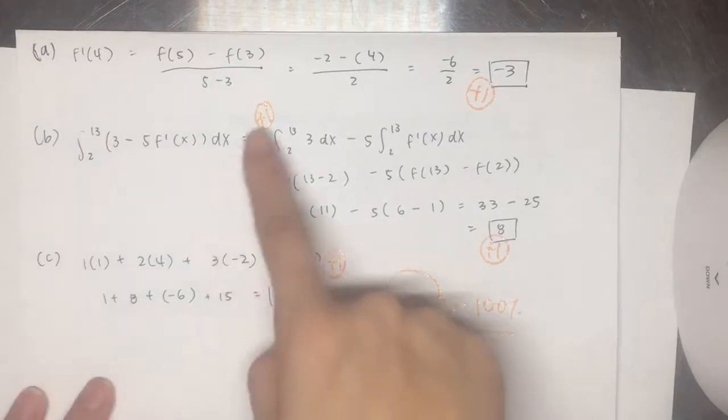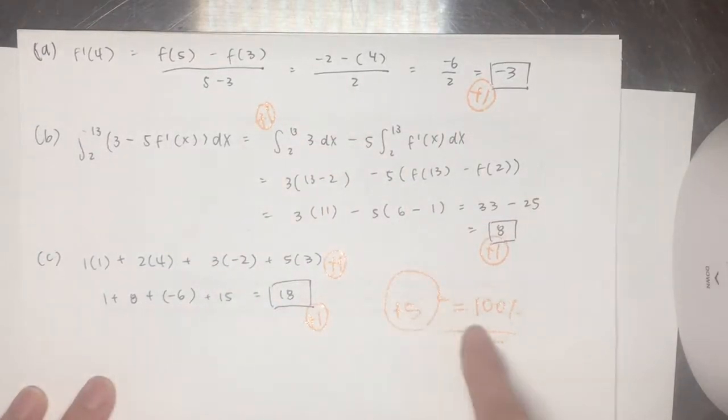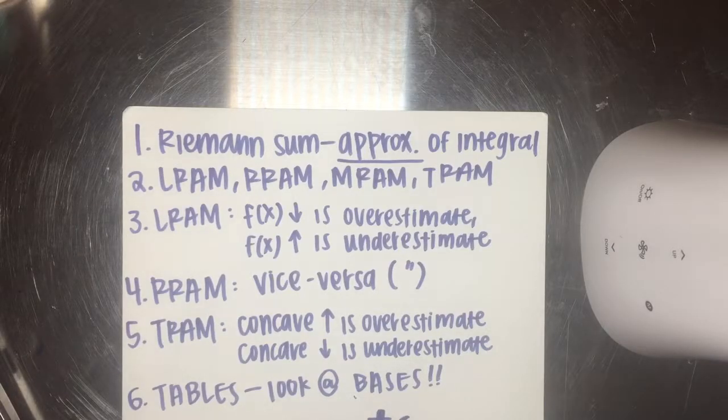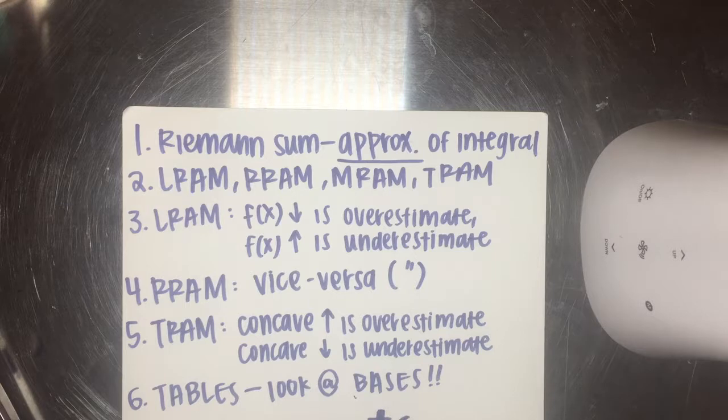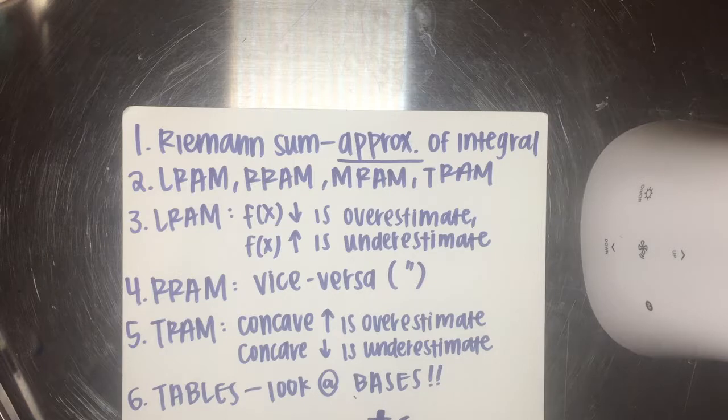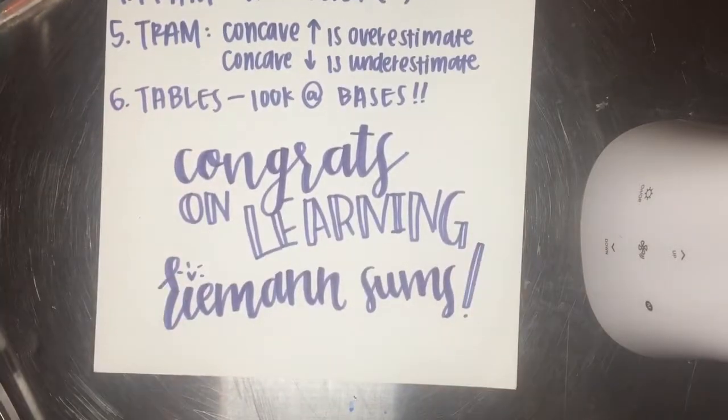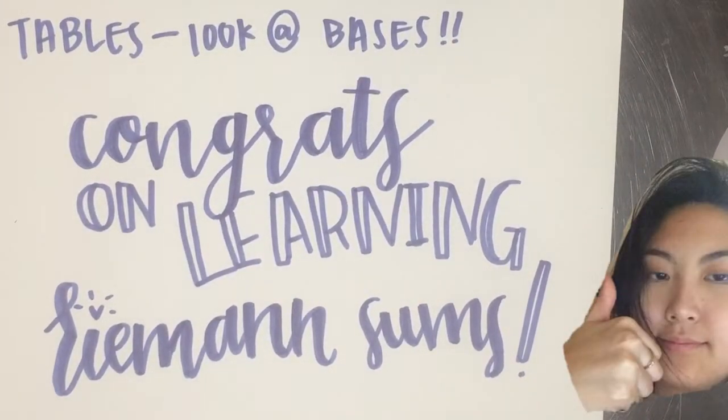So the way I solved everything was the way that AP solved everything. So if you solved it the way I did, you'll get all the points that are possible. So let's review. A Riemann sum is the approximation of your integral. There's four types: LRAM, RRAM, MRAM, and TRAM. For LRAM, if the function is decreasing, it's an overestimate. If it's increasing, it's an underestimate. RRAM's vice versa. For TRAM, if it's concave up, it's an overestimate. And concave down is an underestimate. For tables, look at your bases. Congrats! You finished and you've learned some Riemann sums. You're going to Harvard.